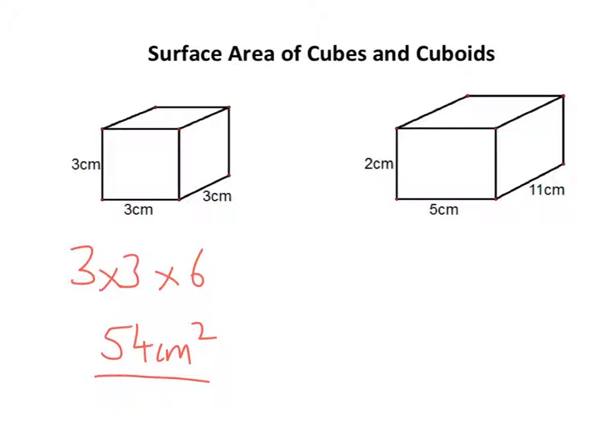A cuboid is a little trickier because you've got a whole load of different lengths. You've got two, five, and eleven in this case. Now, what you have to remember, if I look at this side here, that's two times five is the area of that. Now, that side and the opposite side, which you can't see, it's sort of under there somewhere. It's going to be exactly the same, isn't it? So, two times five times two.